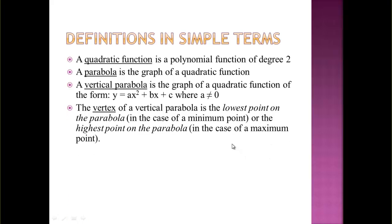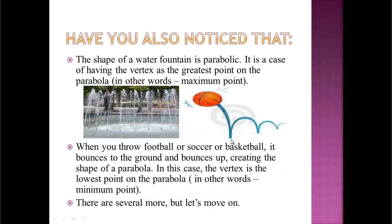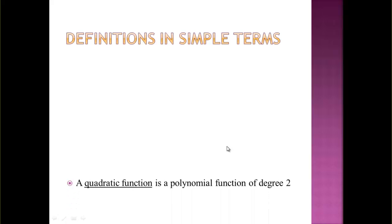The vertex of a parabola can be looked at in two ways. In the case of a minimum point — like when a football bounces — the lowest point is the vertex. In the case of a maximum point, the highest point is the vertex.